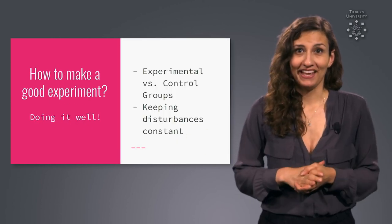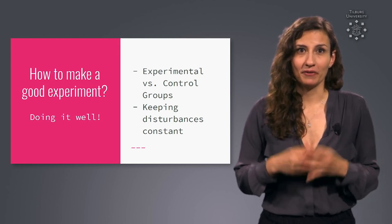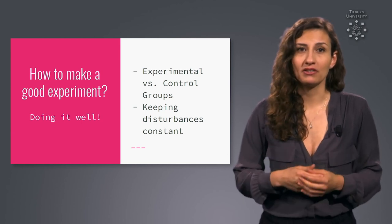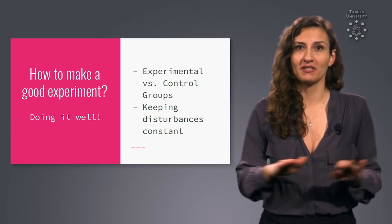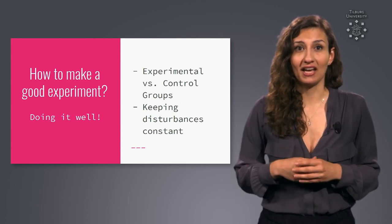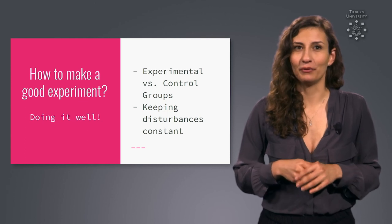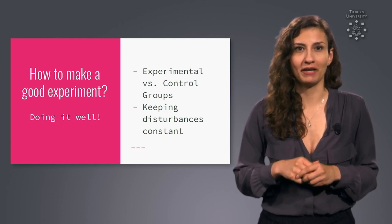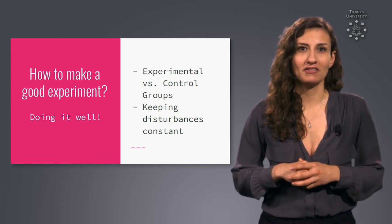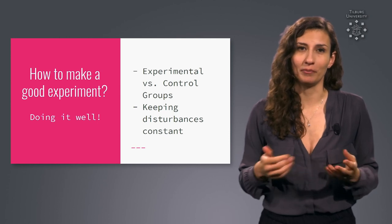So let's sum up. In this part of the course, we have seen how to make an experiment — what experimental and control groups are, and why it's important to keep disturbances constant between them. We have also looked at ways to accomplish that goal. In the next part of the course, we will see if we can spot bad experiments and improve them, and discuss more generally how to deal with shaky insight we might get from experiments.